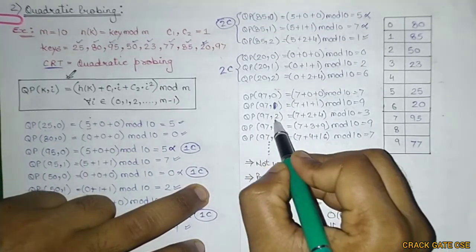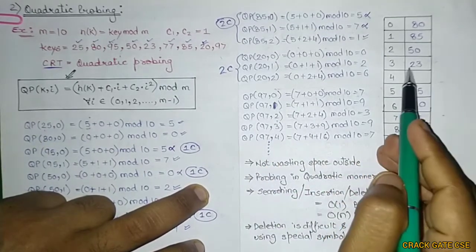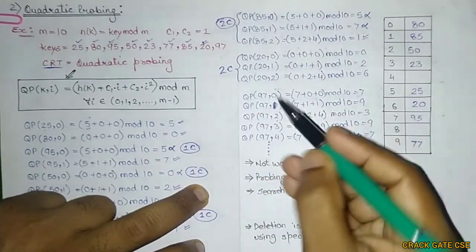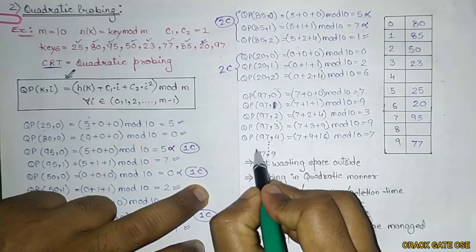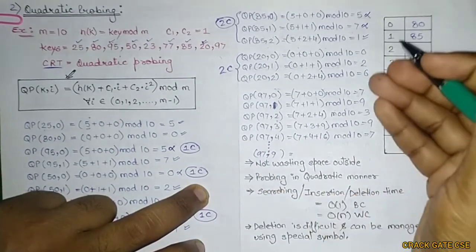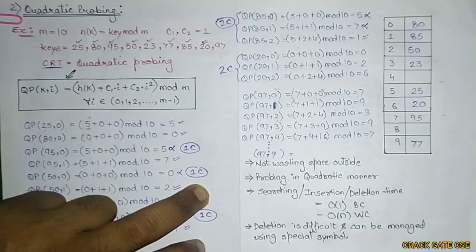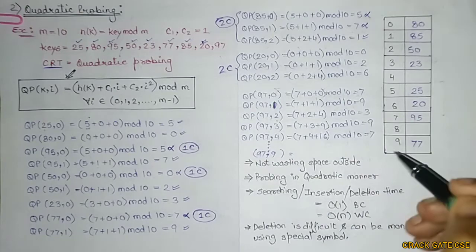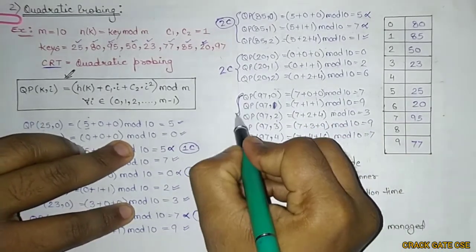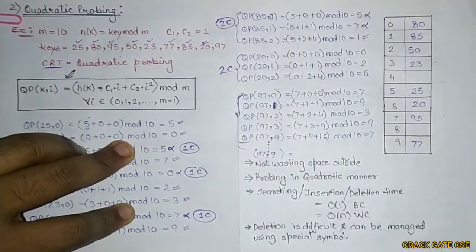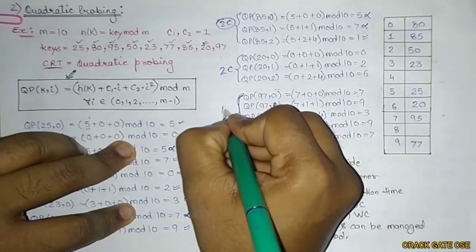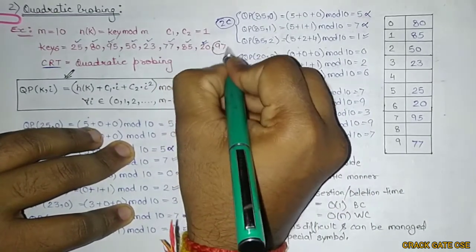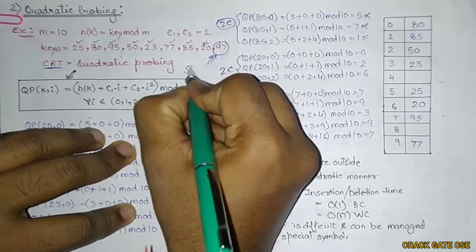For key=97, i=0: slot 7 — not empty. i=1: slot 9 — not empty. i=2: slot 3 — not empty. i=3: slot 9 — not empty. Continuing up to i=9, the values 7, 3, 9 keep repeating. This means we get the maximum M=10 collisions and key 97 cannot be stored in the table.